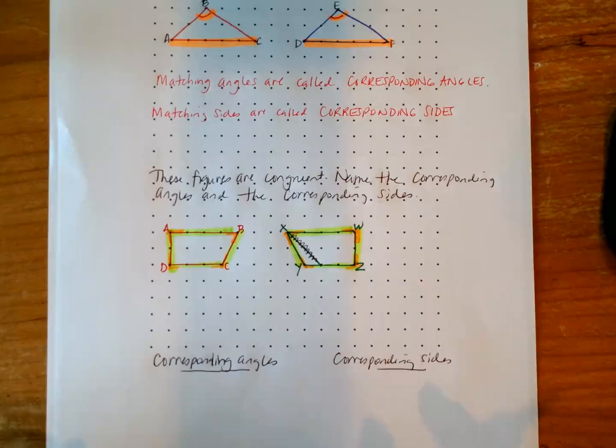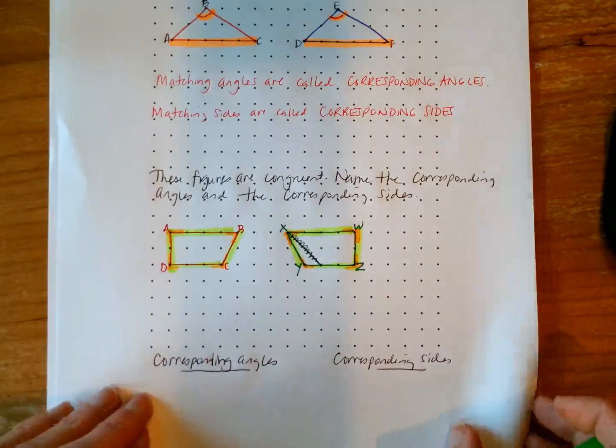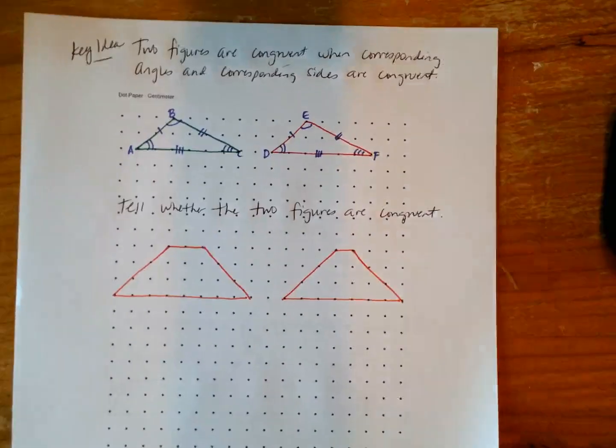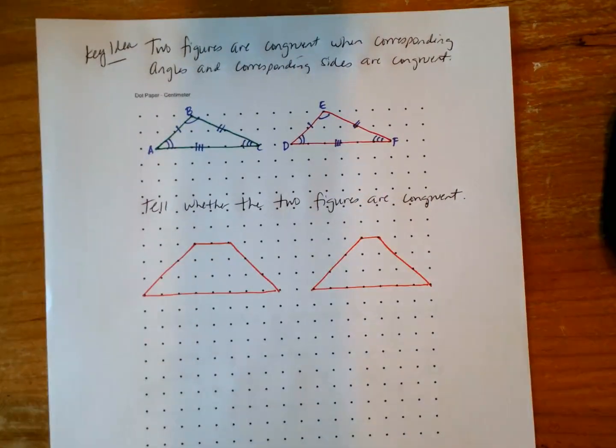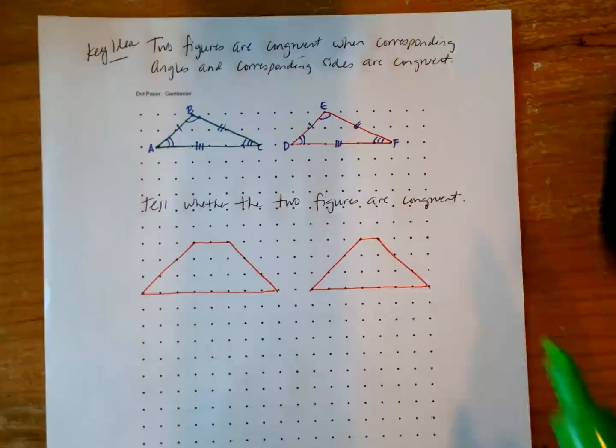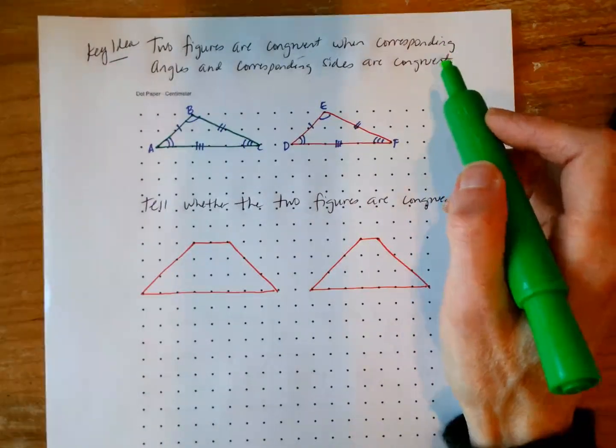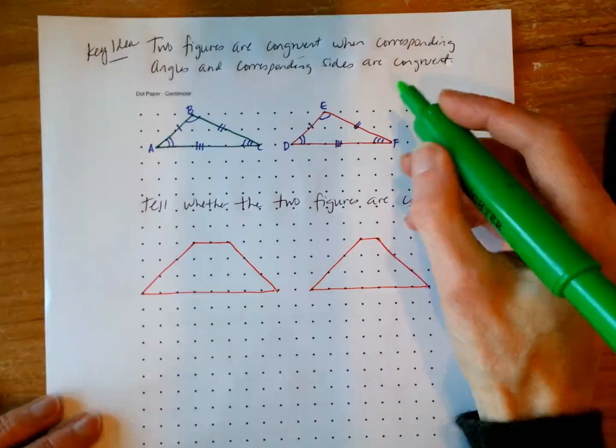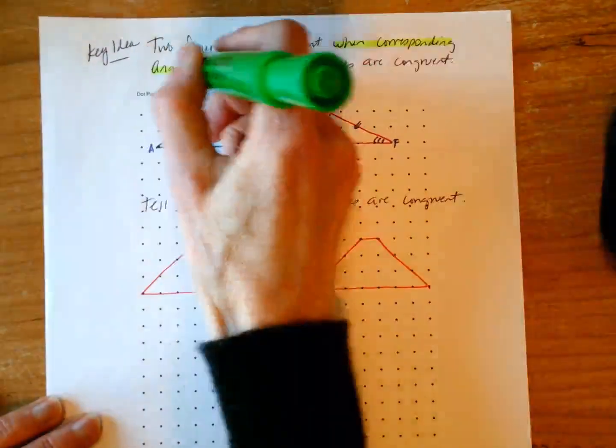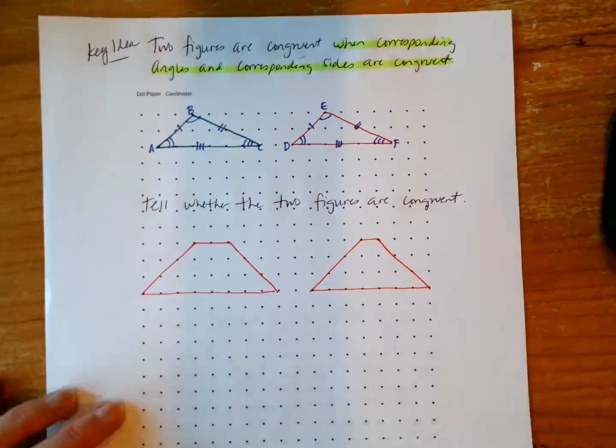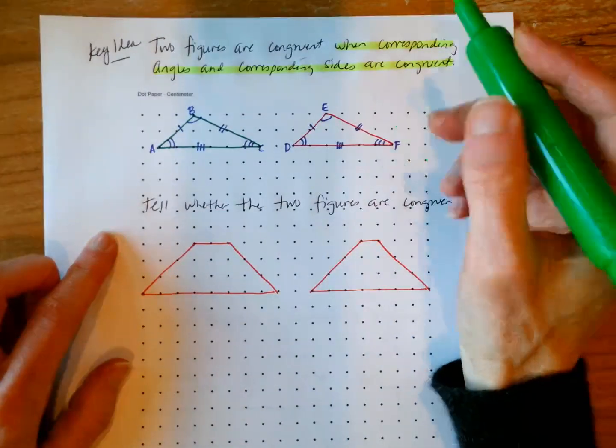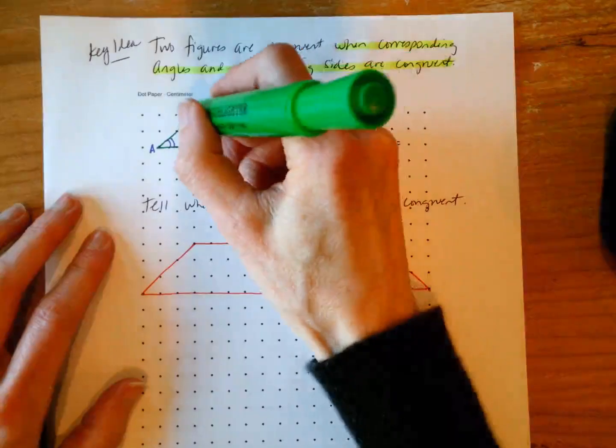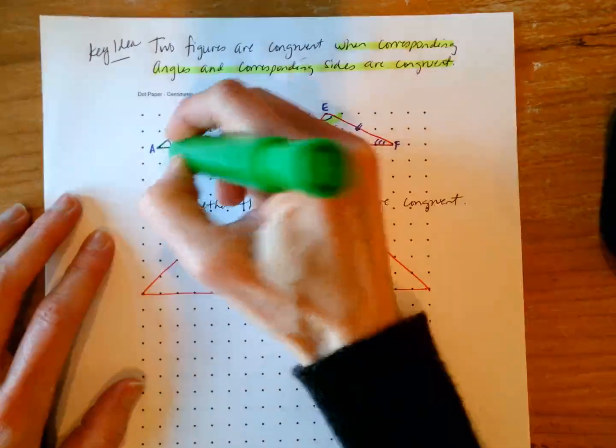So we've got corresponding angles and corresponding sides. So here's the key idea we want to take away from lesson 2.1. Two figures are congruent when corresponding angles and corresponding sides are also congruent. So again, same angles and same size sides.